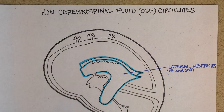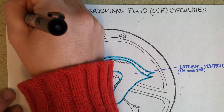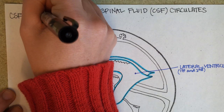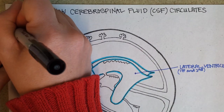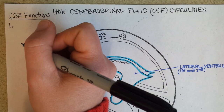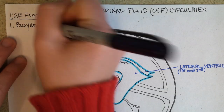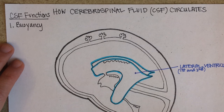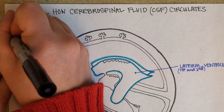The purposes of CSF: we don't know all the functions, but we do know a couple of things for sure. Number one, it gives the brain buoyancy. The brain tissue — the neurons that make it up — is so fragile that without cerebrospinal fluid it would crush under its own weight like a beached whale. So that's one important job.